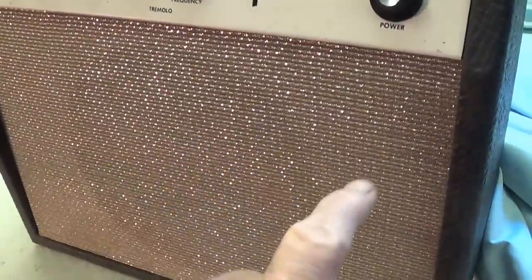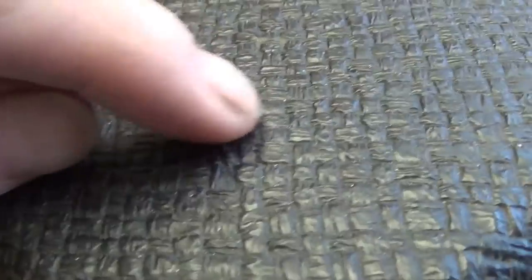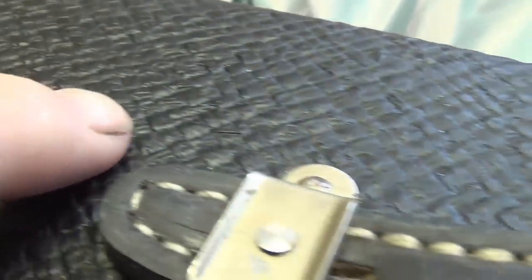We have depth and frequency tremolo controls, loudness, and tone controls with two inputs. Next is the grill cloth, which is bright, sparkly, and in absolutely flawless condition. Looking up here on top, that really coarse type of covering material that Gibson used. It's sort of a basket weave, highly embossed pattern.